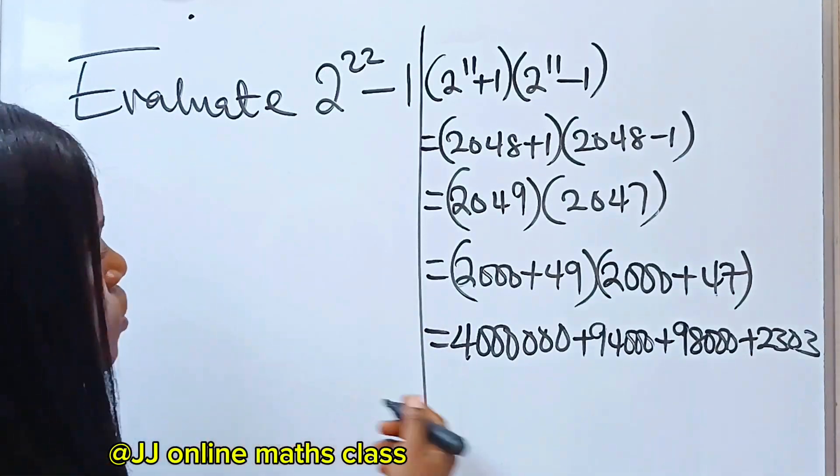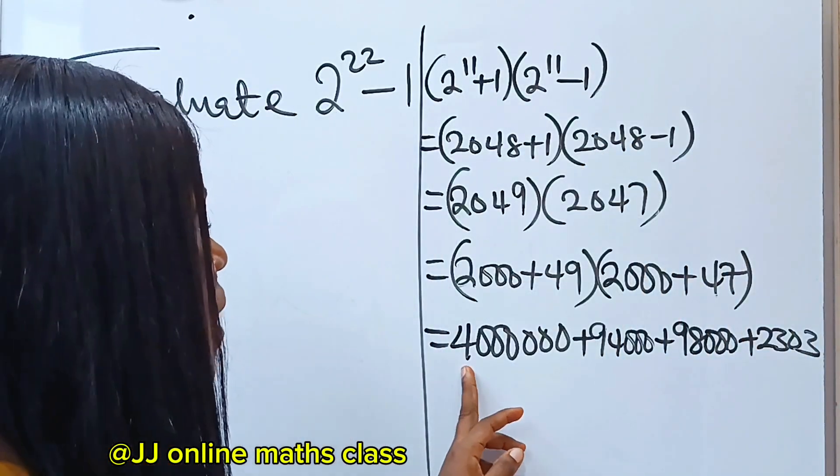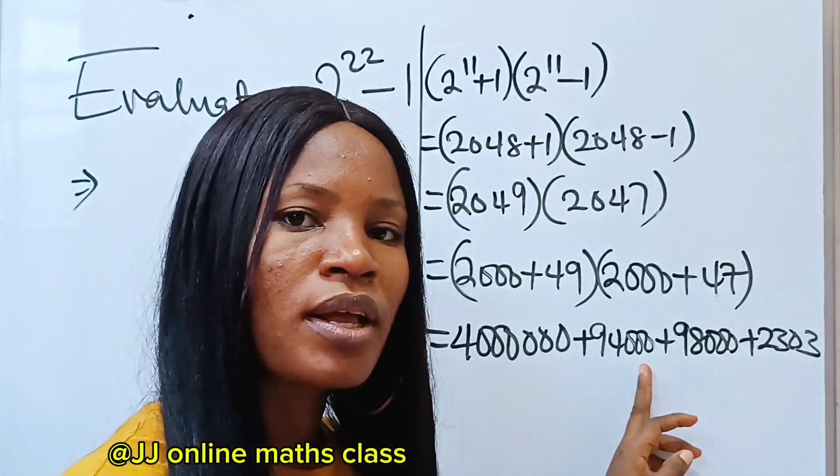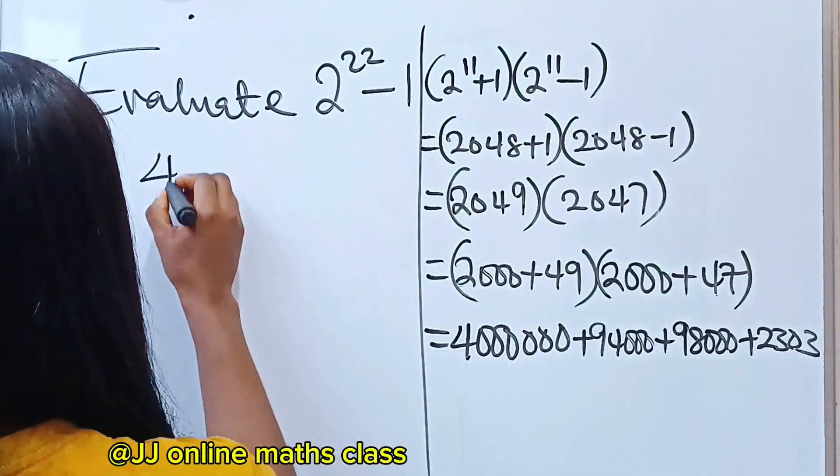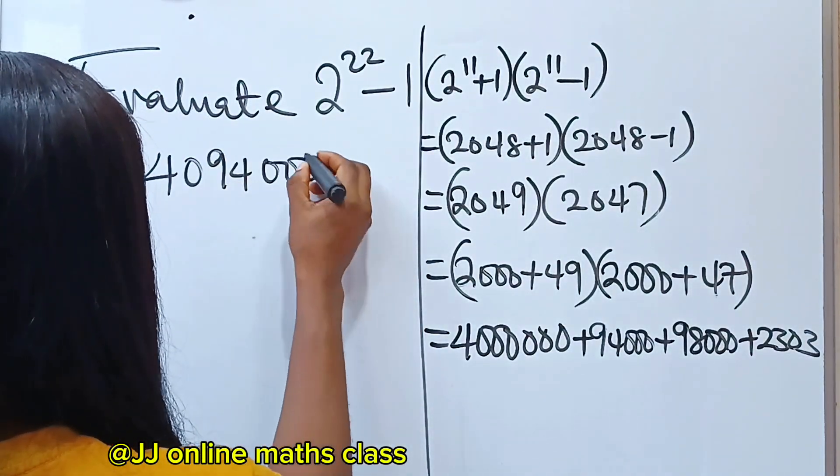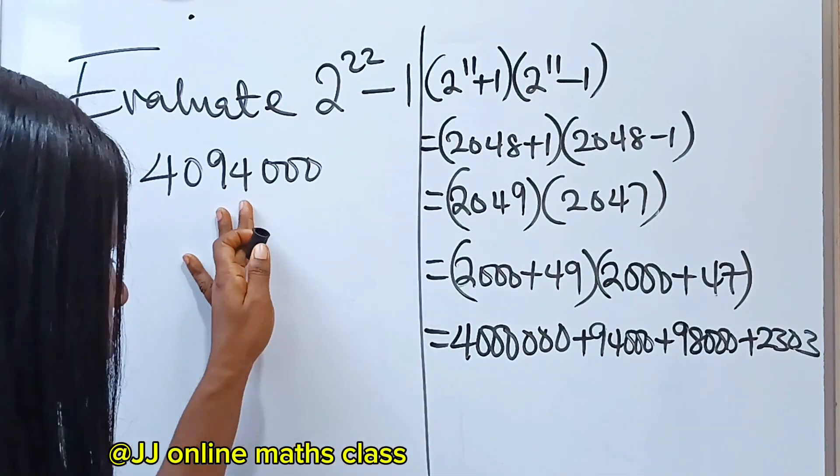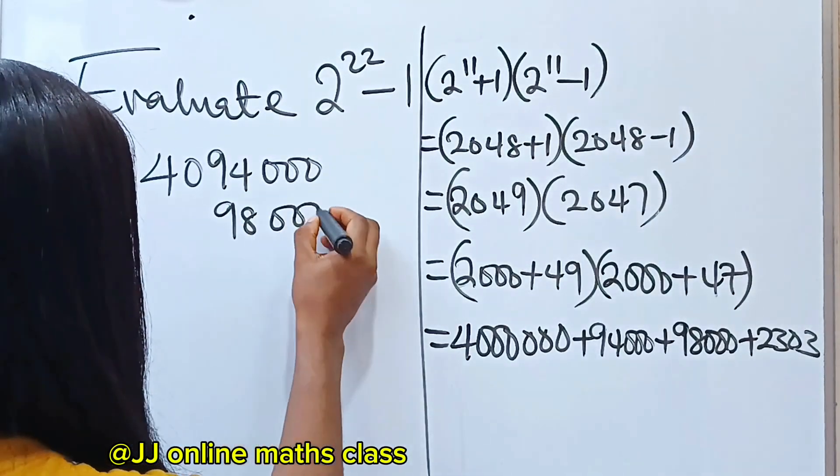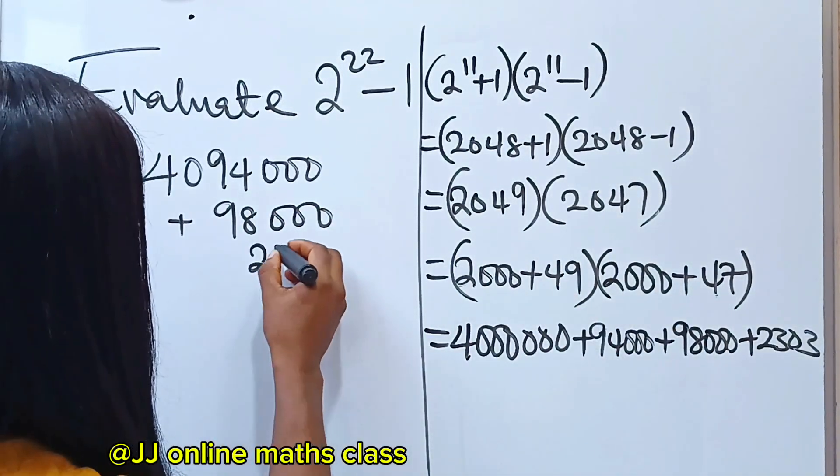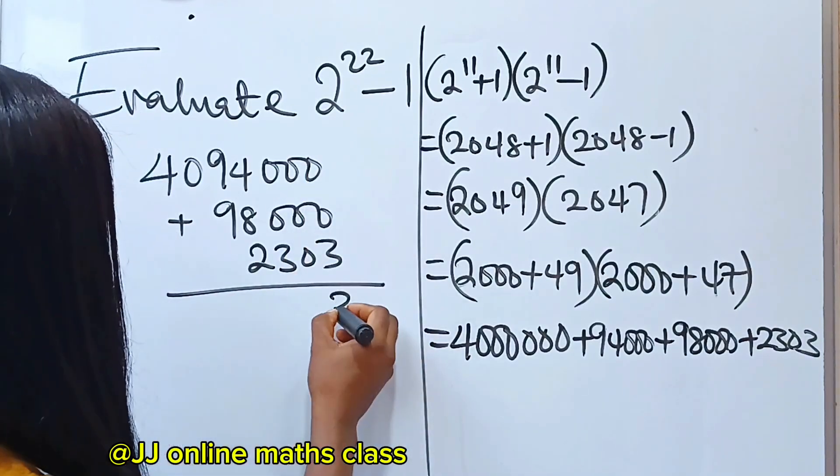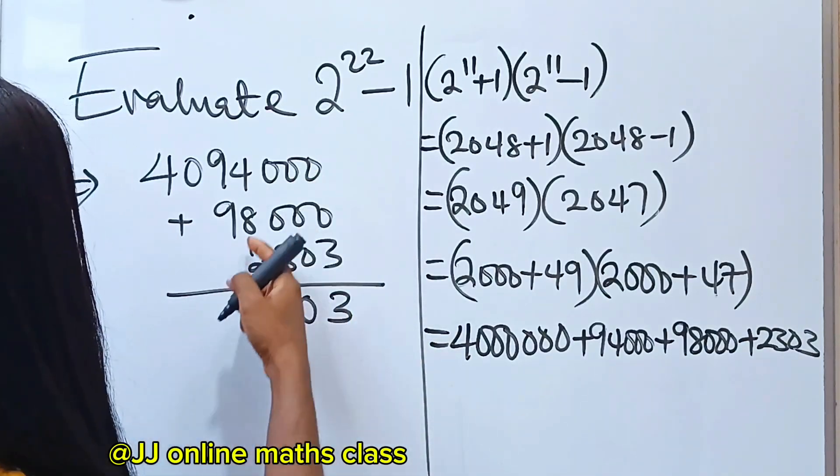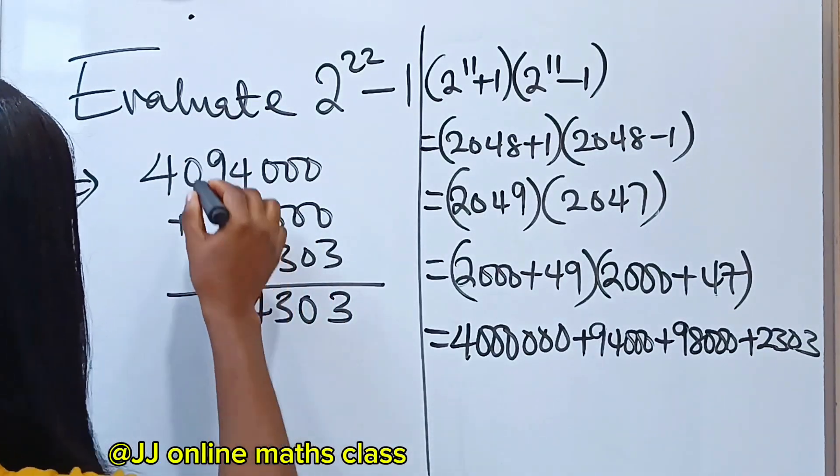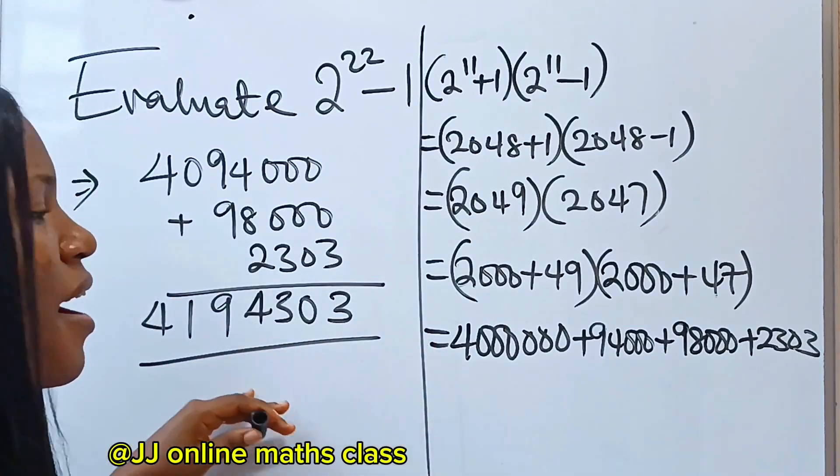So all we need to do now is to add the whole of this. 4 million plus 94,000 is going to be 4,094,000. Now we are going to add from here. So we add 98,000 and we are going to add 2,303. Bring this down, bring down 0, bring down 3. This is 12 plus 2 is 14, you carry 1. You have 19 here, you carry 1. Bring it down. And this is our final solution.